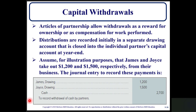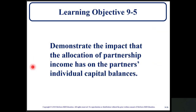Capital withdrawals: the Articles of Partnership allow withdrawals as a reward for ownership or as compensation for work performed. Distributions are recorded initially in a separate drawing account that is closed into the individual partner's capital account at the end of the year. Assume James and Joyce take out $1,200 and $1,500 respectively from their business. The journal entry debits James's drawing account for $1,200 and Joyce's drawing account for $1,500, with a credit to cash for $2,700.